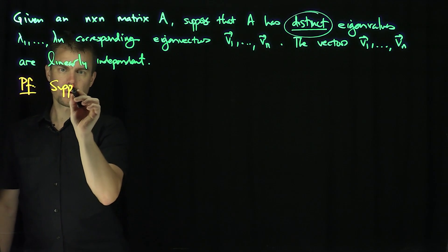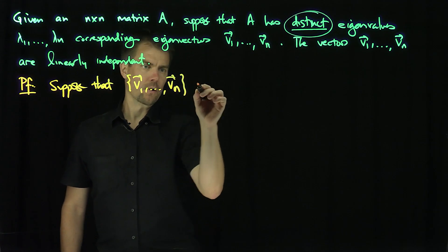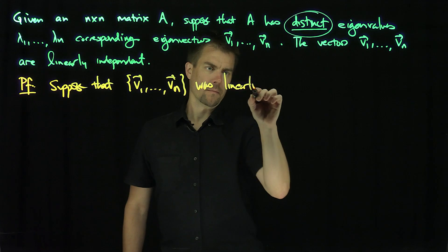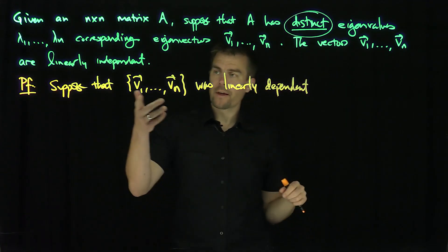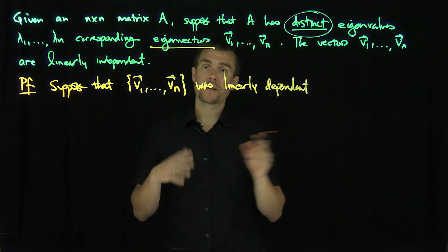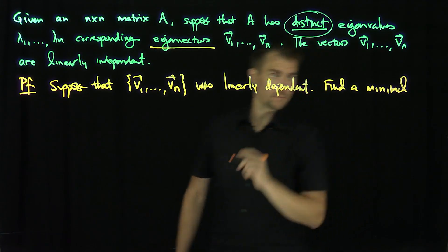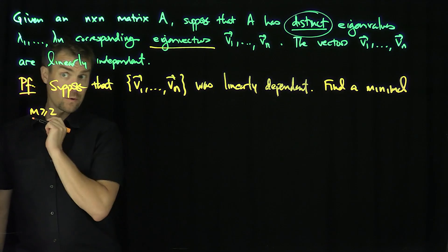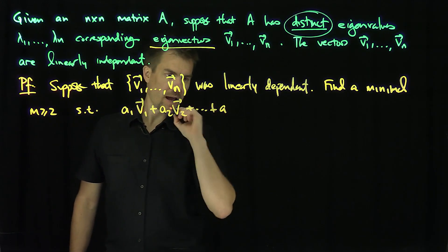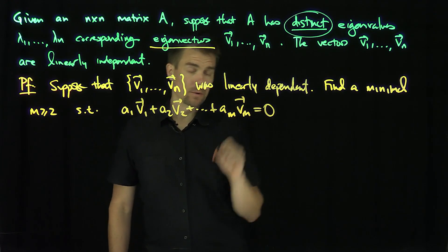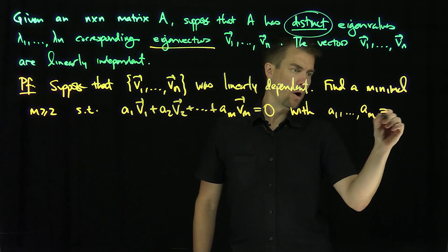Let's suppose the opposite is true. Suppose that the set v1 through vn was linearly dependent. Then I can find a minimal m greater than or equal to 2 such that a1*v1 + a2*v2 + ... + am*vm equals zero, where the coefficients a1 through am are all non-zero.